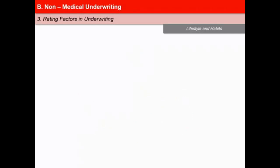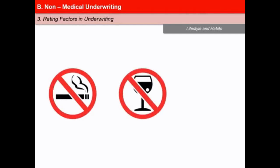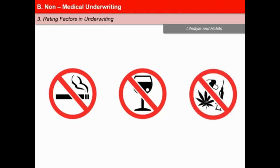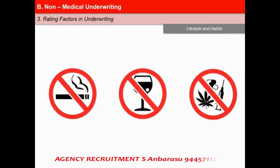Lifestyle and habits cover a wide range of individual characteristics, for example smoking, drinking alcohol, and substance abuse like drugs or narcotics, sedatives and other similar stimulants. Generally, the agent's confidential reports and moral hazard reports are expected to mention if any of these characteristics are present in the individual's lifestyle which suggest exposure to risk.